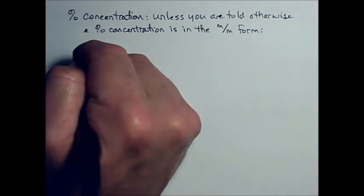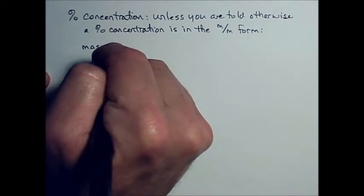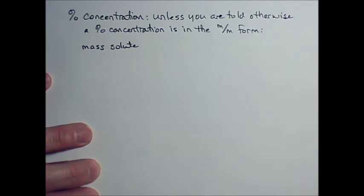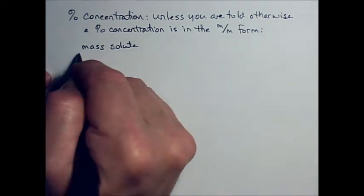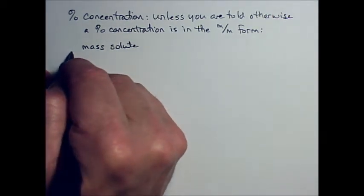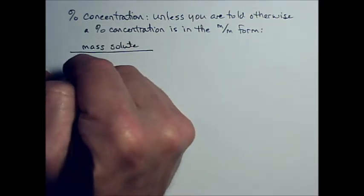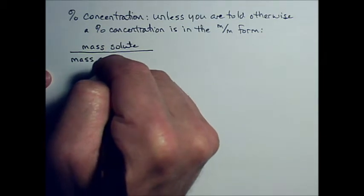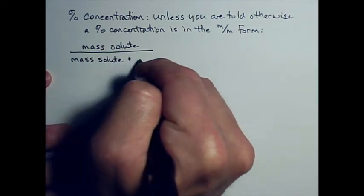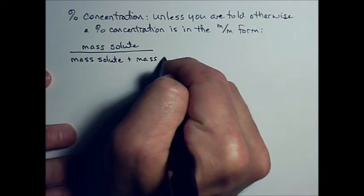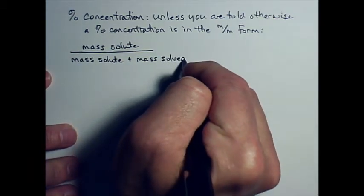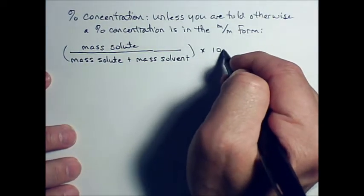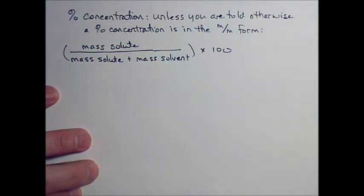What that means is you're going to take the mass of the solute, just the measured mass, and you're going to put that over the sum of masses of the solute and solvent, so mass of the solute plus the mass of the solvent times 100 to get a percent.